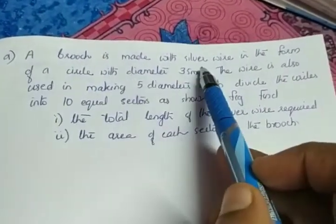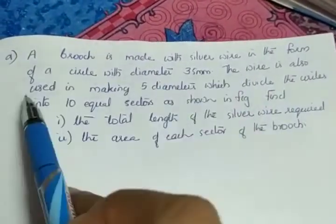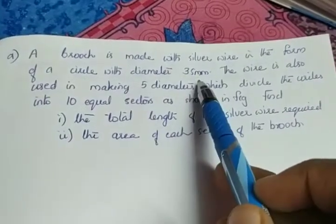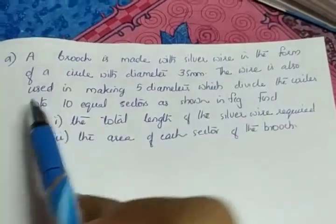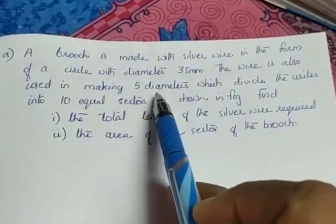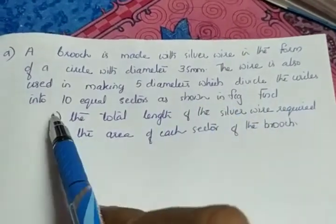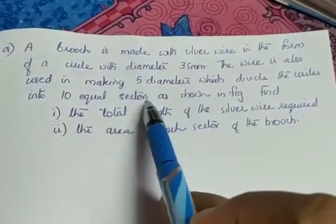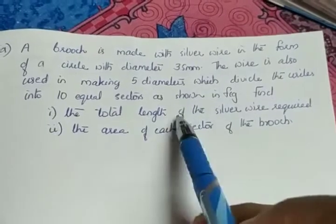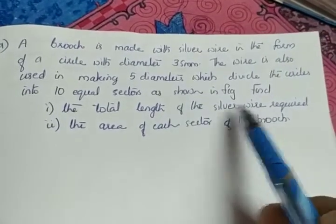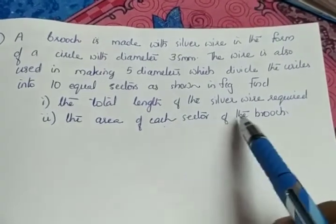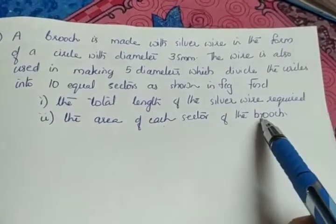A brooch is made with silver wire in the form of a circle with diameter 35 mm. The wire is also used in making 5 diameters which divide the circle into 10 equal sectors as shown in the figure. Find the total length of the silver wire required, and the second part is the area of each sector of the brooch.